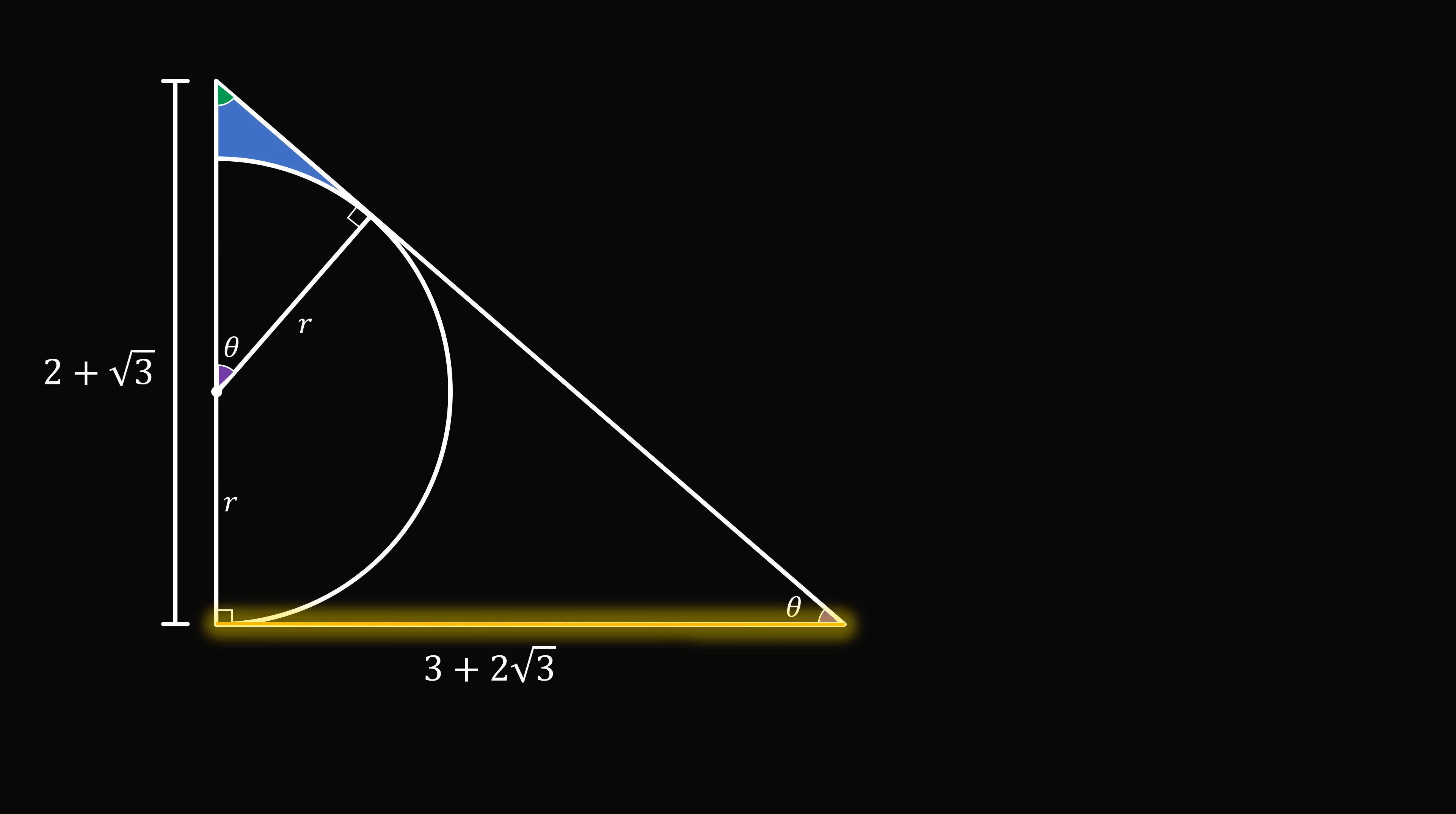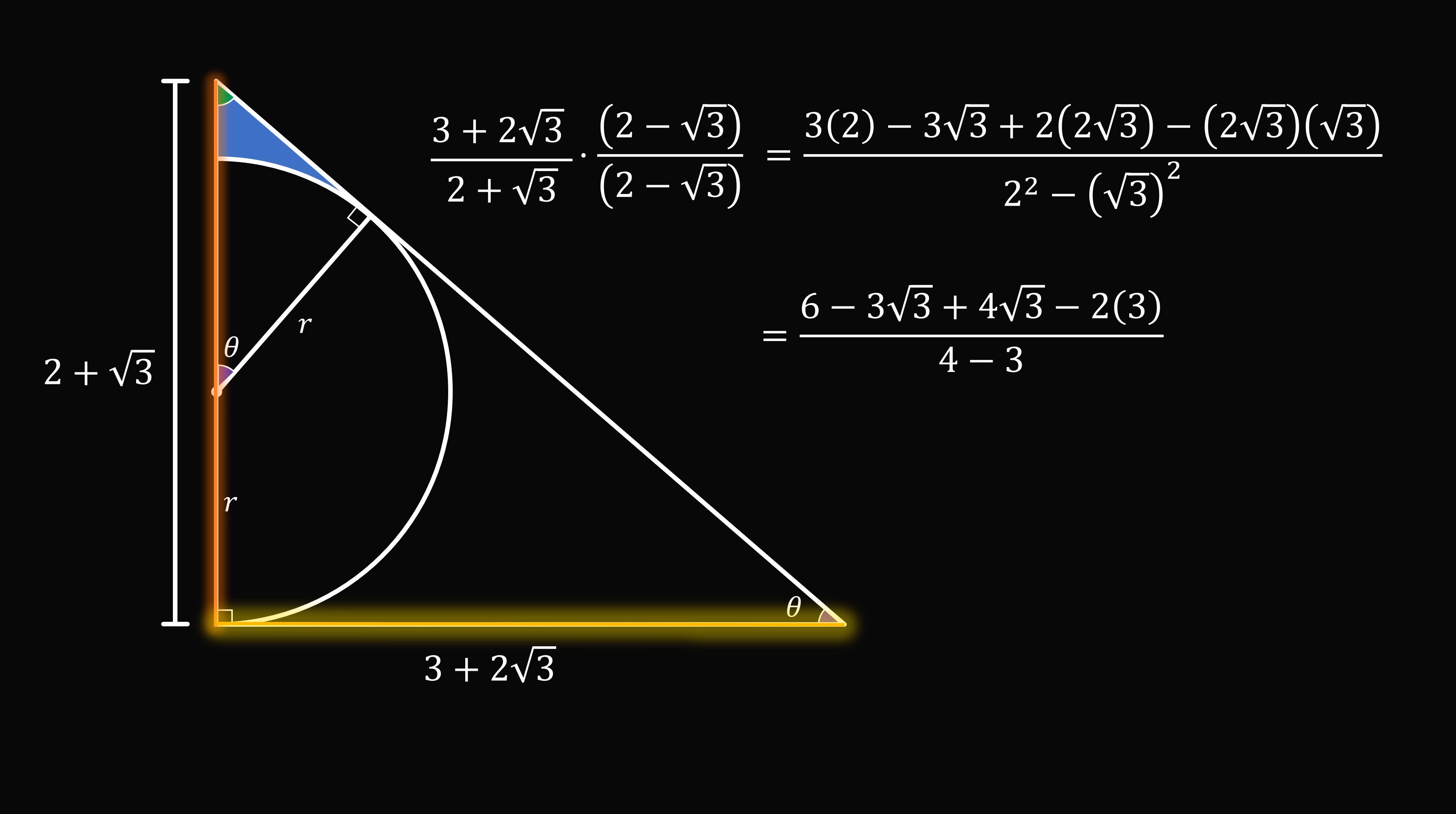Let's take the ratio of the length of the longer leg to the shorter leg. So we want 3 plus 2 root 3 divided by 2 plus root 3. In order to simplify this, let's multiply the numerator and the denominator by the conjugate of the denominator. If the denominator is 2 plus root 3, we will multiply the numerator and the denominator by 2 minus root 3. This makes the denominator a difference of squares, which is 2 squared minus the square of root 3. In the top, we just have to go through and distribute. We now carefully will simplify, and magically this all works out to be equal to root 3.